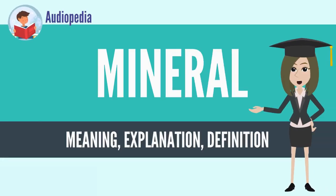A mineral is a naturally occurring chemical compound, usually of crystalline form and not produced by life processes. A mineral has one specific chemical composition, whereas a rock can be an aggregate of different minerals or mineraloids.